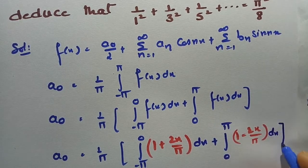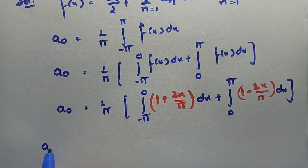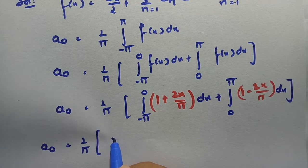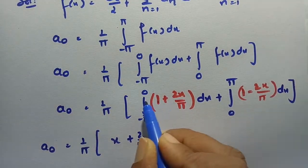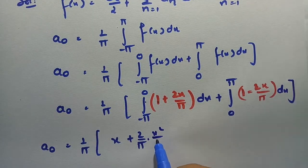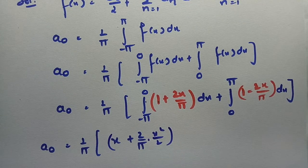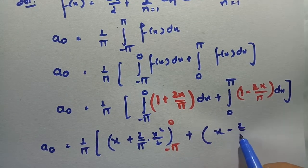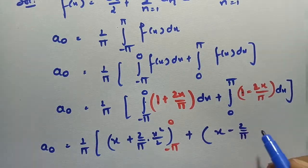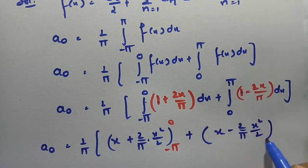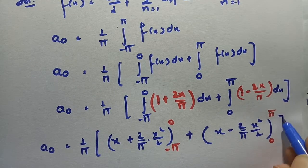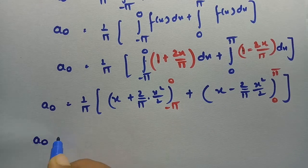Now solving for a₀: ∫1 dx = x and (2/π) is a constant so ∫x dx = x²/2, between the limits −π to 0. Next, ∫1 dx = x and (2/π) is a constant so ∫x dx = x²/2, between the limits 0 to π. Substituting upper limit minus lower limit gives the value of a₀.